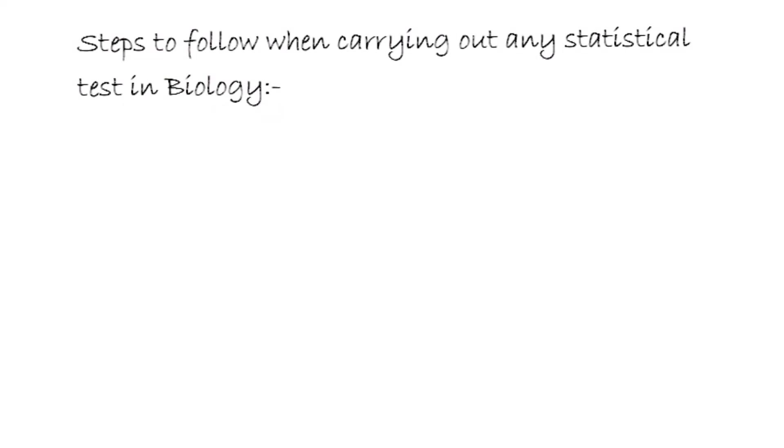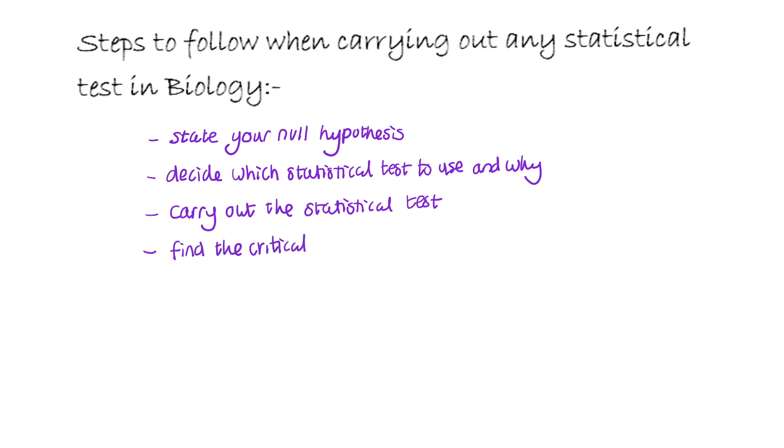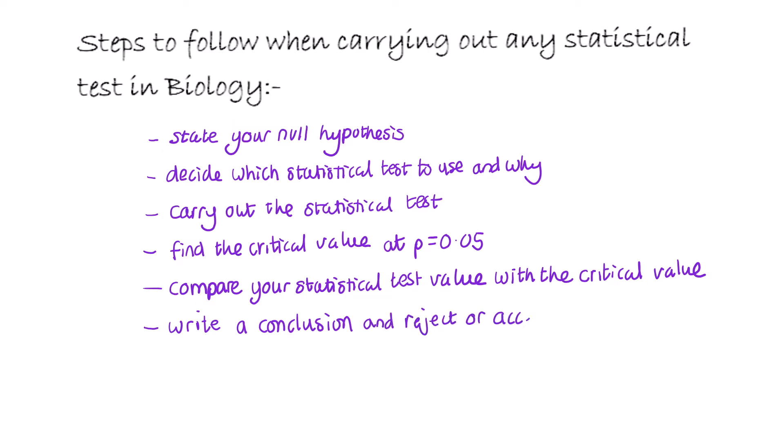There are steps to follow when carrying out any statistical test. Firstly, you need to state your null hypothesis. Then decide which statistical test to use and why. Carry out the statistical test. Find the critical value at p equals 0.05. Compare your statistical test value with the critical value and then write a conclusion and reject or accept the null hypothesis.